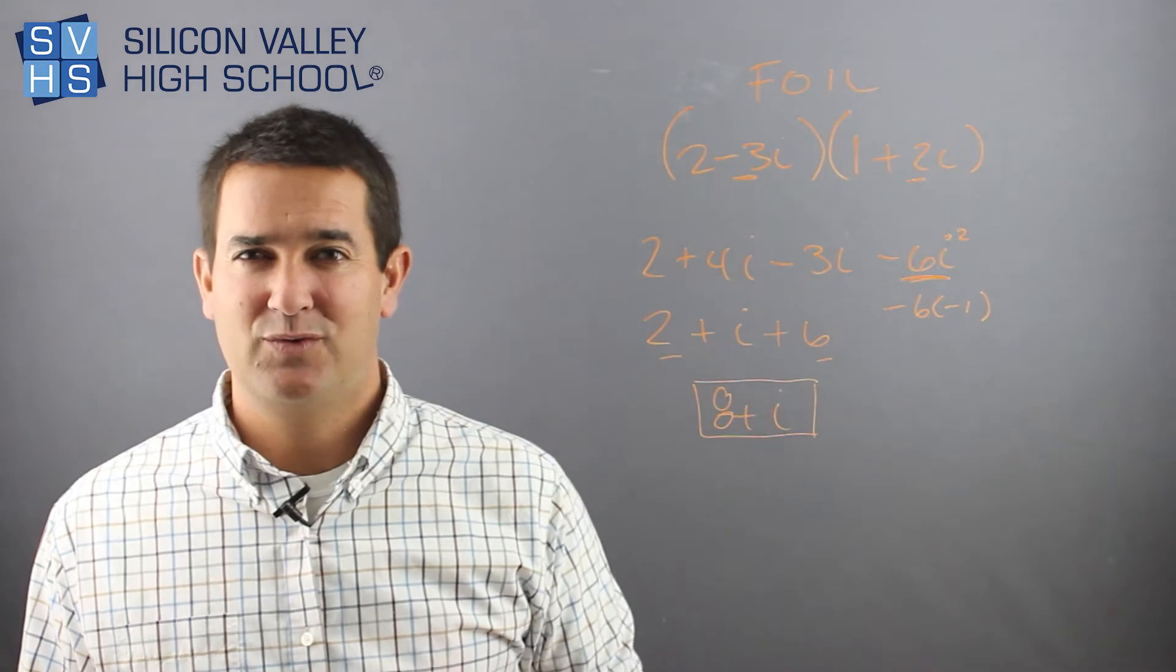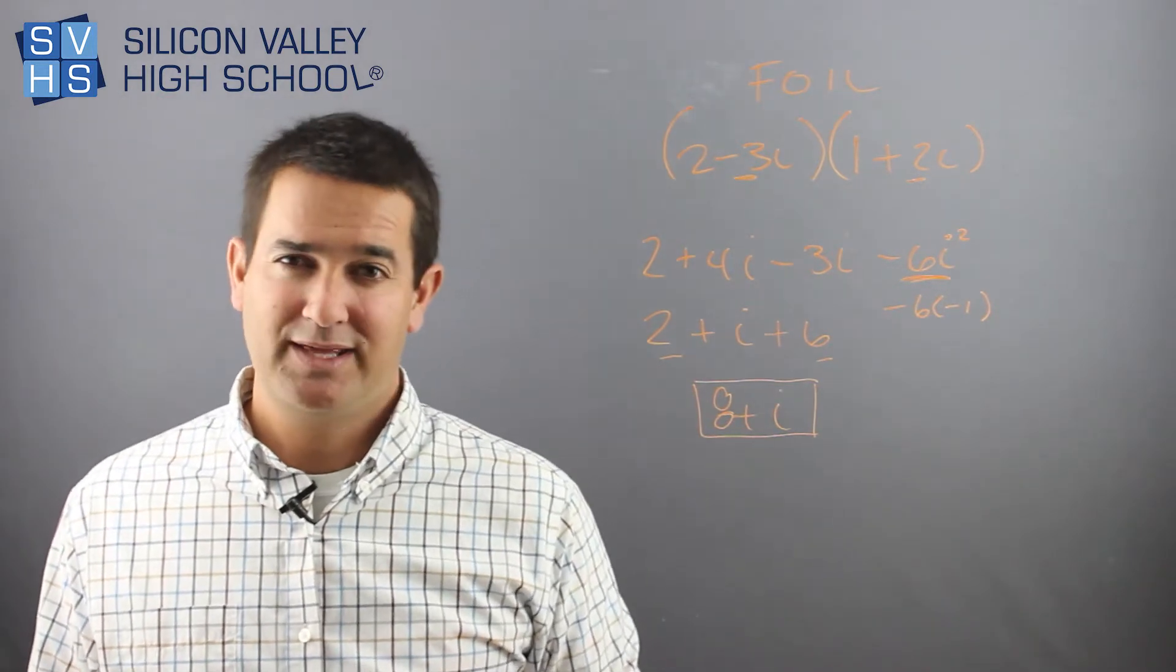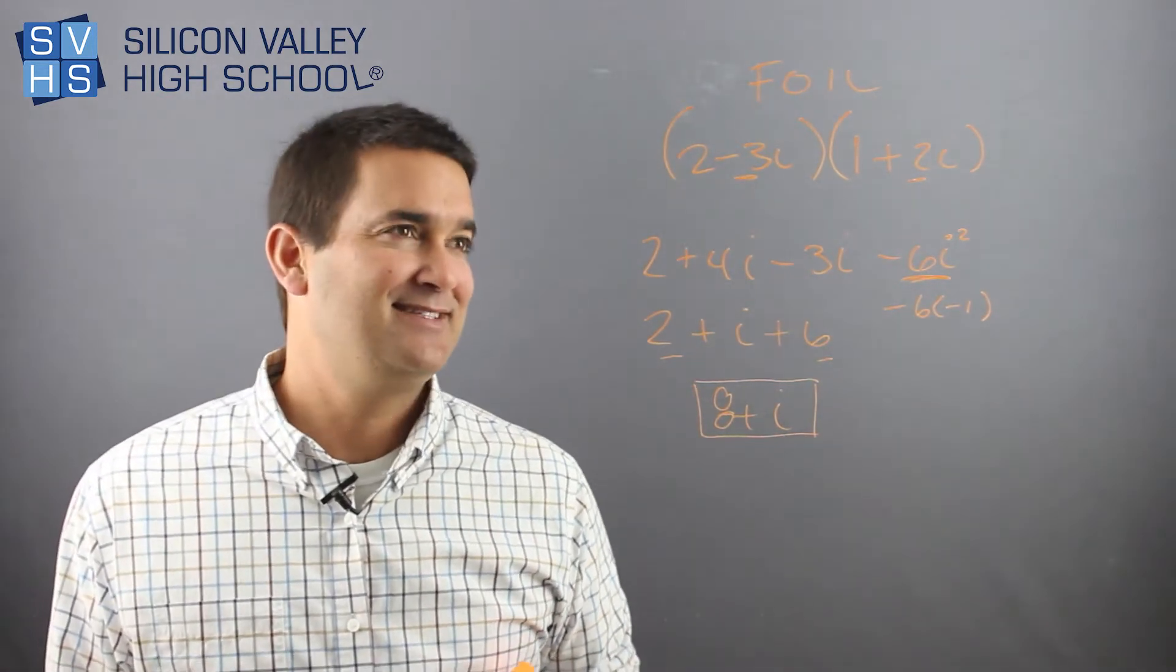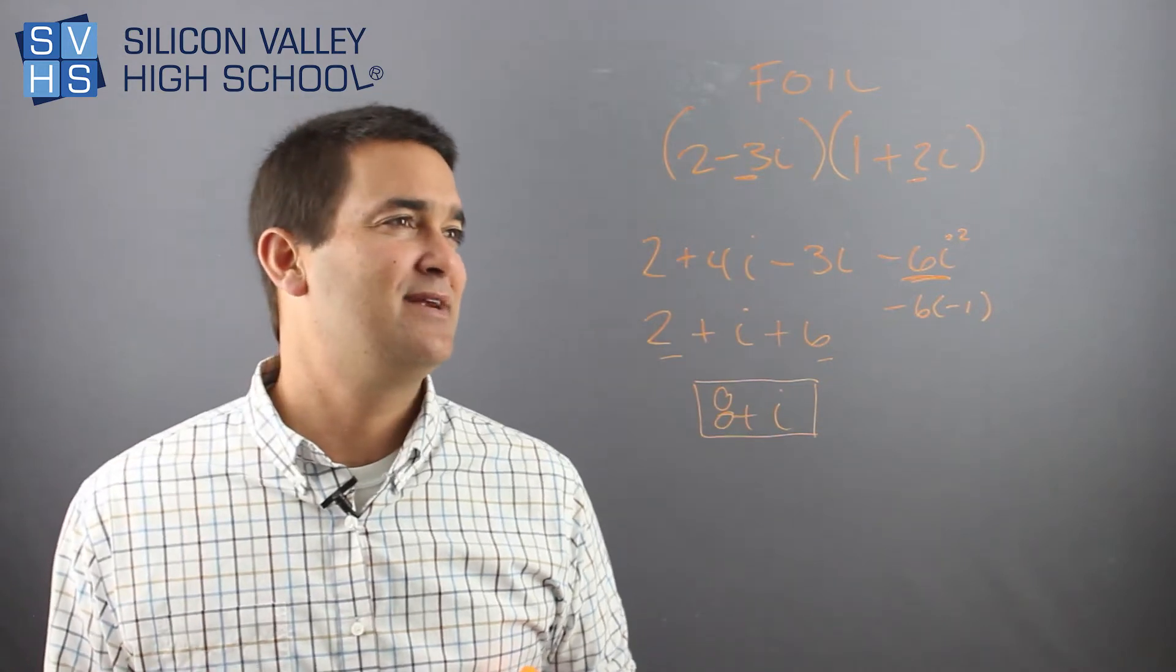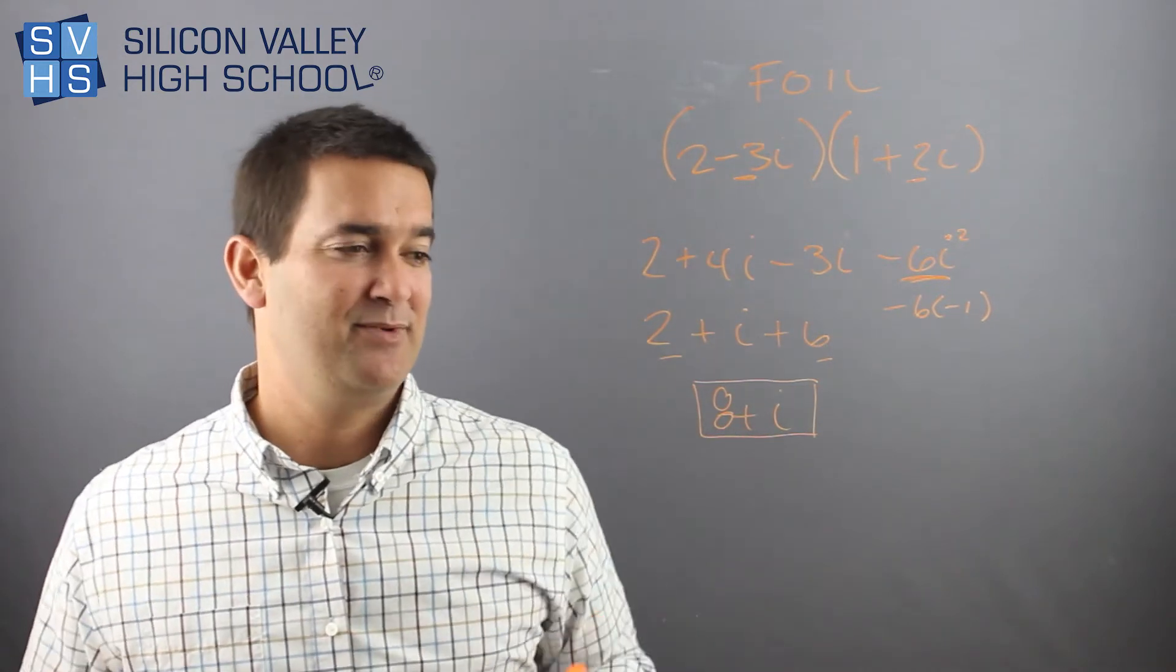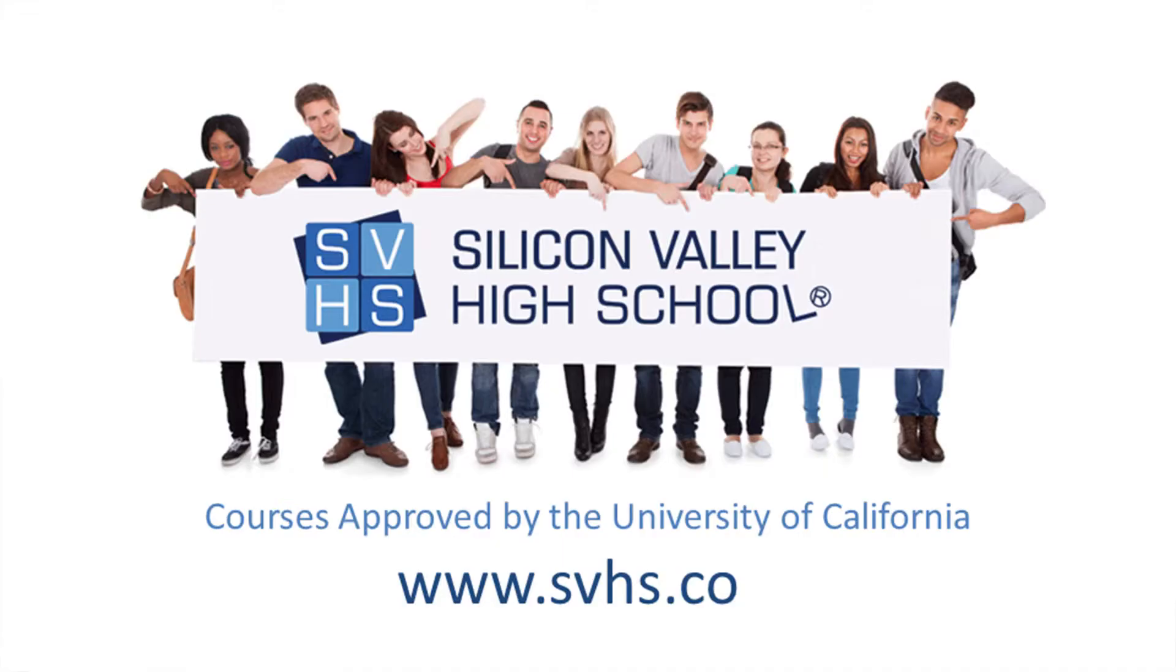I did it here. I kind of did it sort of quickly, so you could watch another video on FOILing if you're really unclear on that. And that's it. That's operations with imaginary numbers. Of course, there's more, but this is a common one. And remember, if you're struggling in Algebra 2 at your local high school, you can take it online at Silicon Valley High School and the credits will be transferred back to your school.